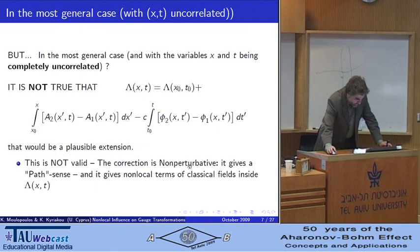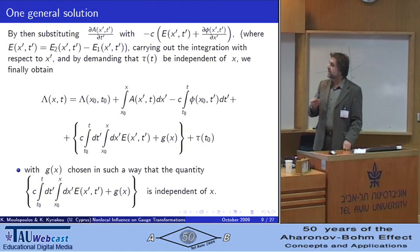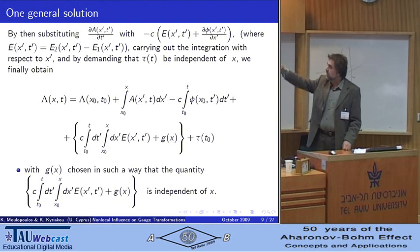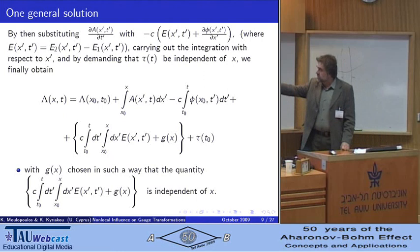What turns out as the correct gauge function is, here I don't show how, but one can at the end verify that this is correct and it satisfies the initial system of partial differential equations, is a form that has the usual line integrals that we know, vector potential, spatial, and temporal integral of scalar potential, but it has some additional terms that they call non-local terms of classical fields.